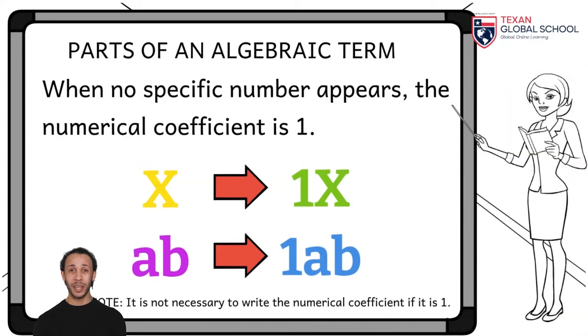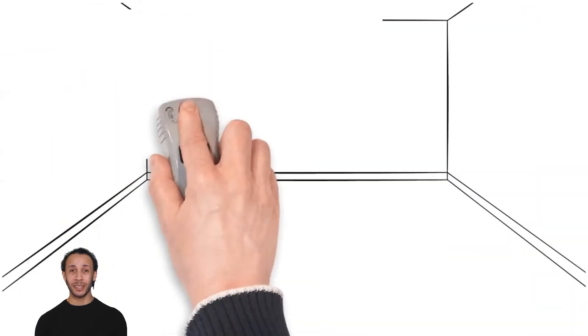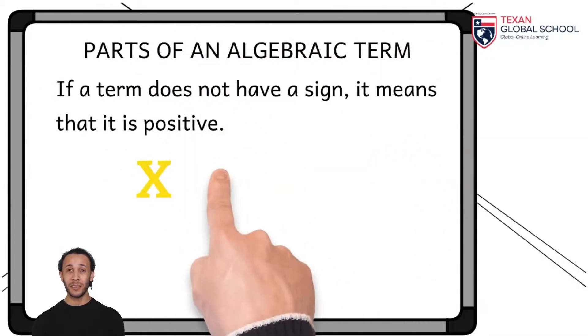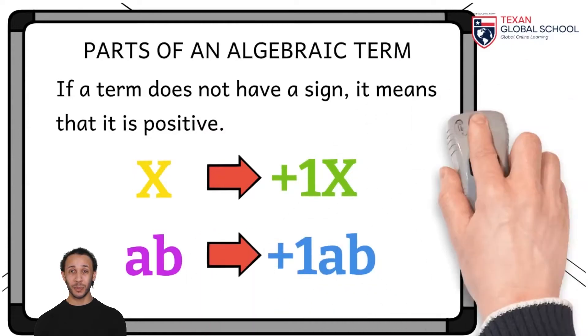The algebraic notation indicates that, in this single case, it is not necessary to write the number 1. On the other hand, if the sign does not appear, then it means that the sign of that numerical coefficient or algebraic term is positive.